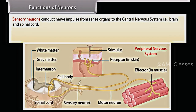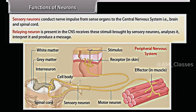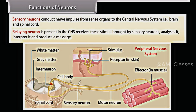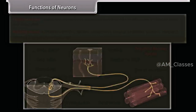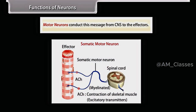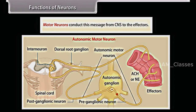Sensory neurons conduct nerve impulses from sense organs to the central nervous system — that is, brain and spinal cord. Relaying neurons are present in the CNS, receive stimuli brought by sensory neurons, analyze and interpret them, and produce a message. Motor neurons conduct this message from the CNS to the effectors.